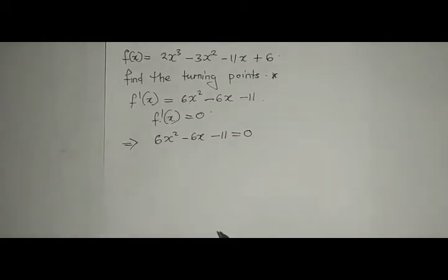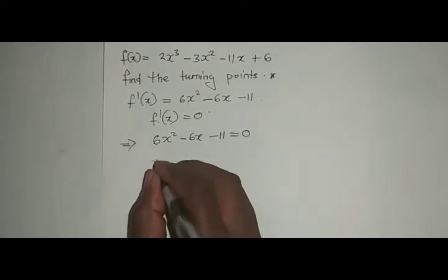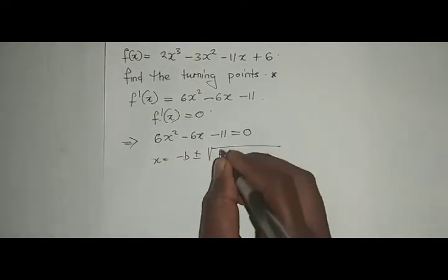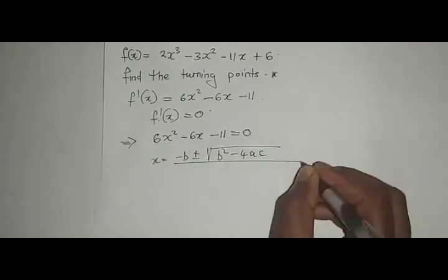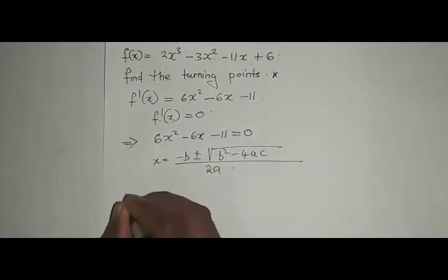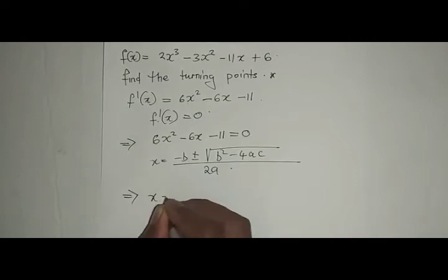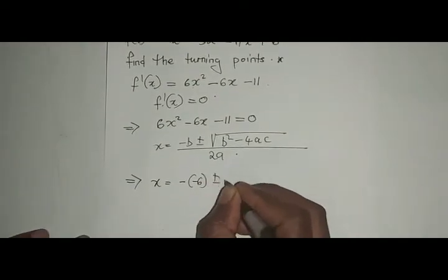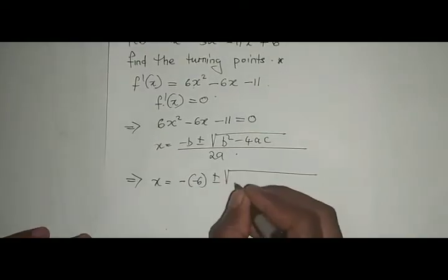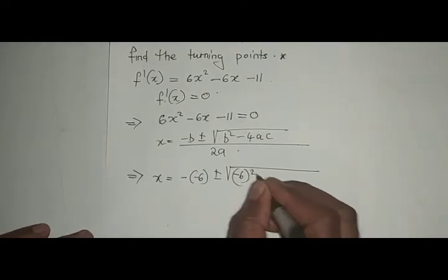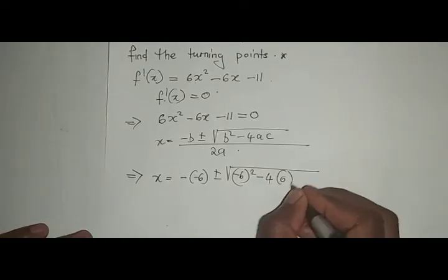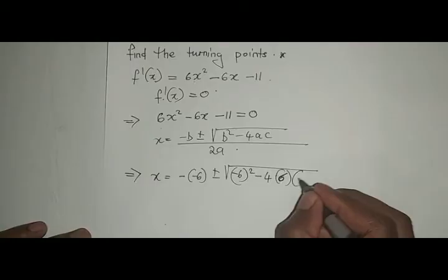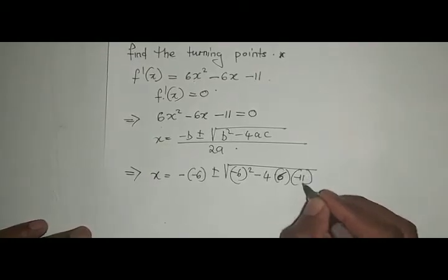That is to say, x equals -b ± √(b² - 4ac) all over 2a, which in this case, x equals -(-6) ± √((-6)² - 4(6)(-11)) all over 2(6).